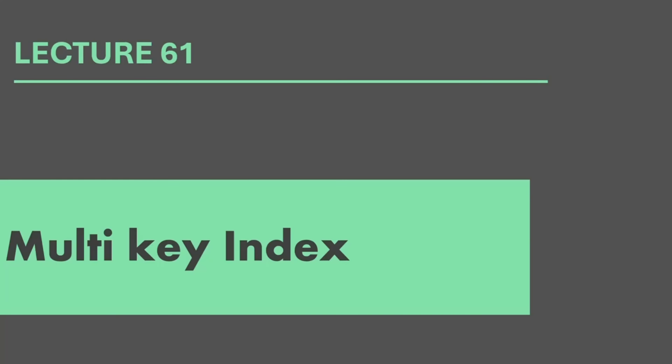Now there are two more types of indexes which we can create in MongoDB: multi-key index and text index. Remember that text index is also a kind of multi-key index. In this lecture let's learn what is a multi-key index, and then in the next lecture we will learn about text index.